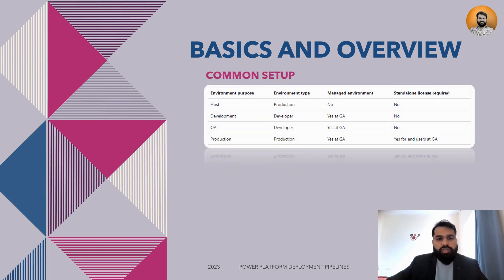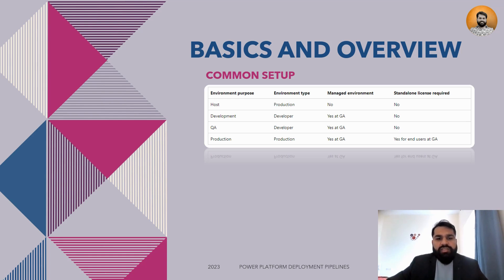The common setup includes four different environments: one is the host environment, then we have a development environment, a QA environment (also known as the test environment), and the production environment. The major difference is that the host environment is unmanaged, while the other three environments must be managed environments.